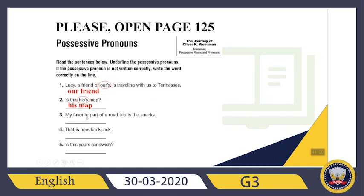Let's check the third sentence: My favorite part of a road trip is the snacks. Which one is my possessive pronoun? Good — 'my', my favorite part. This is already written correctly; I don't need to change it. What about the fourth sentence? That is her backpack. 'Her' is my possessive pronoun. Do I need to add 's'? No, I don't. So 'her backpack' will be the correct one.